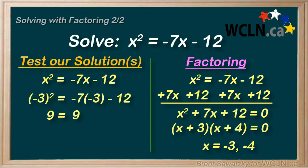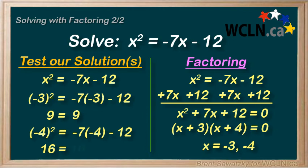If we tried negative 4 we would have negative 4 squared equals negative 7 times negative 4 minus 12. Or 16 on the left and 28 minus 12 on the right. 16 equals 16. Again confirmed. So tested and proven, these are in fact solid solutions.